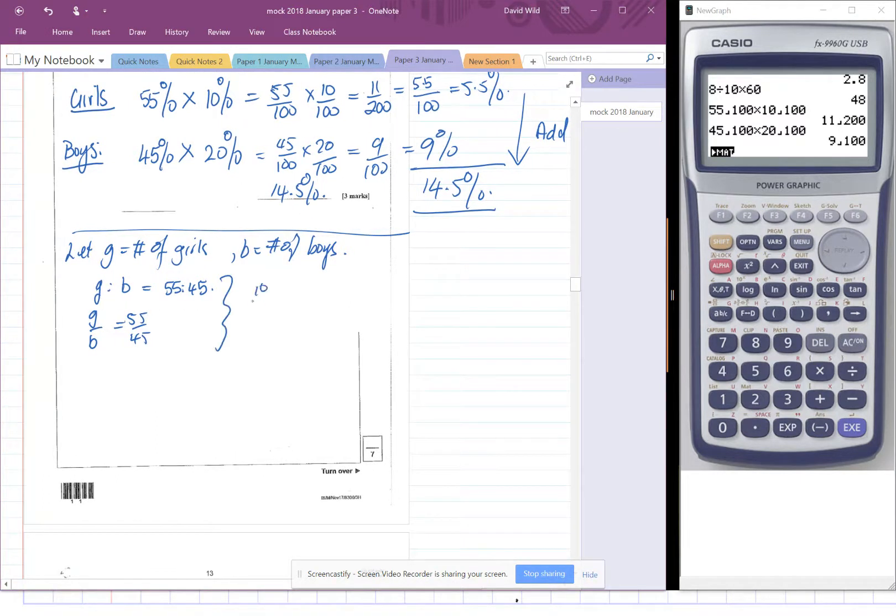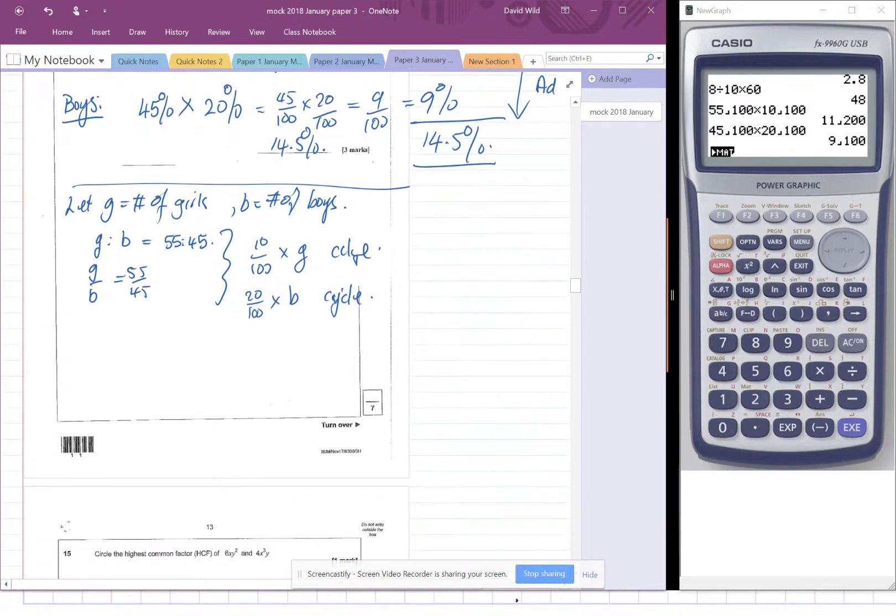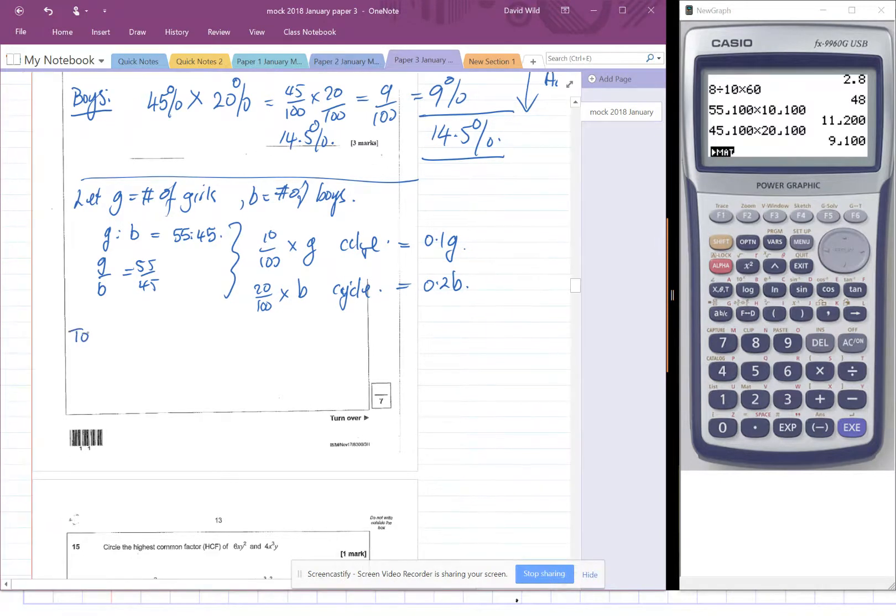Right okay so how many cycle? Well 10% times the number of girls that we don't know who cycle, and we know that 20% of the number of boys cycle. So which of course is 0.1G and this is 0.2B. So the total number of people cycling, total cyclists, is 0.1G plus 0.2B divided by the total number in the school which is the number of girls plus the number of boys.